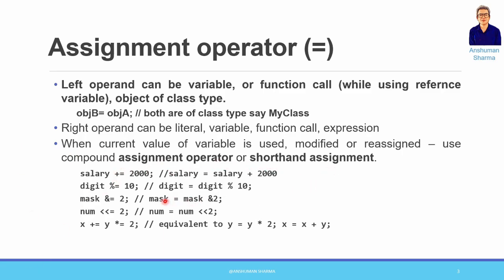Now let's discuss compound assignment operators — these are called shorthand operators. When you need to use the current value of the left-hand side variable and modify or reassign it, instead of writing 'salary = salary + 2000' to increase everyone's salary by 2000, you can combine plus and equal to write 'salary += 2000'. This is a compound assignment operator. All arithmetic operators can be written in compound assignment form, and bitwise operators can also be written as compound assignment operators.